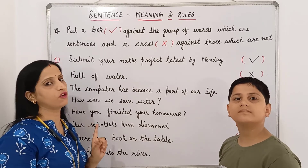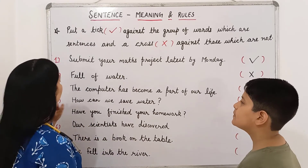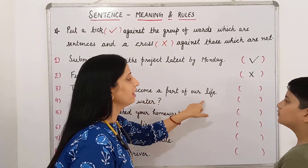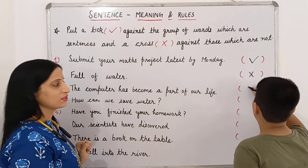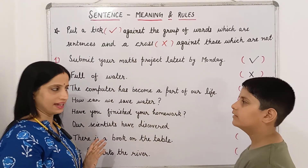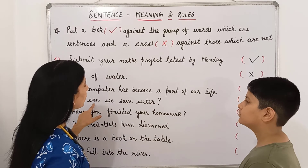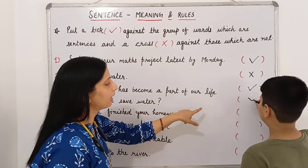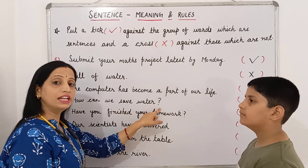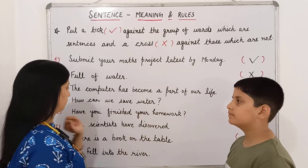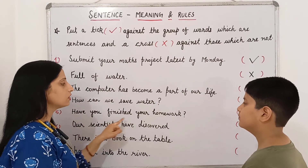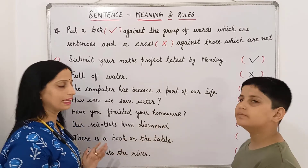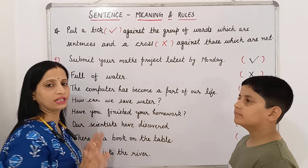The third one is: 'The complete thing has become a part of our life.' Is it a sentence? Yes, so we will put a tick. The next one is: 'How can we save water?' Yes, it is a sentence, so we will put a tick — and it is an interrogative sentence. The next is: 'Have you finished your homework?' Is it a sentence? Yes, so we will put a tick. It is also an interrogative sentence.